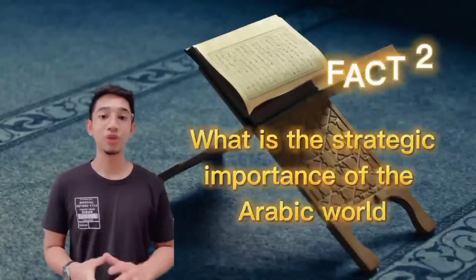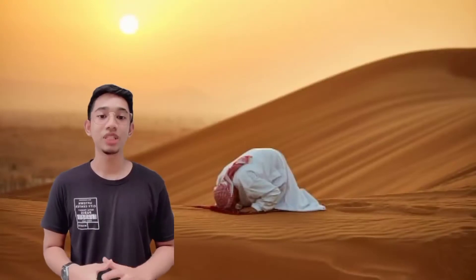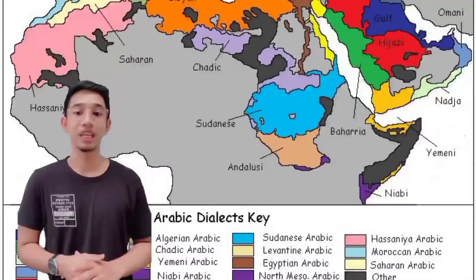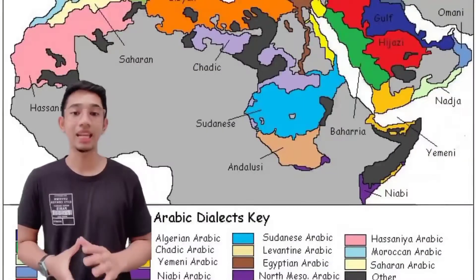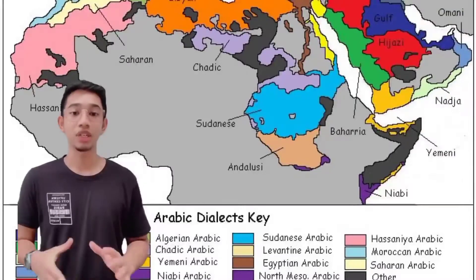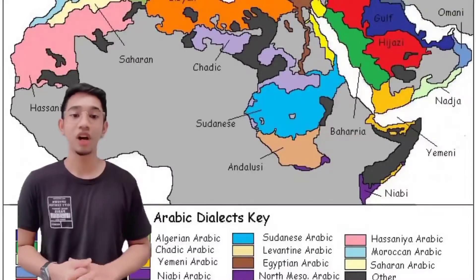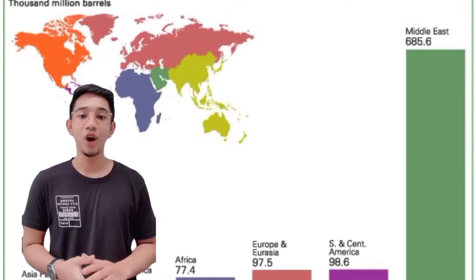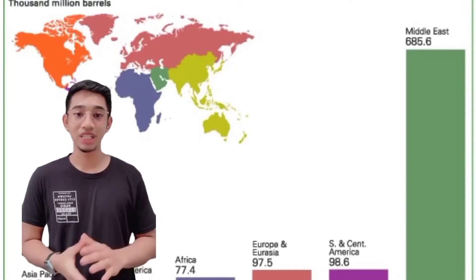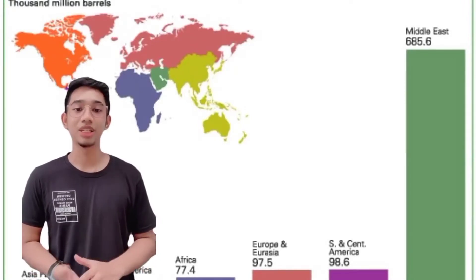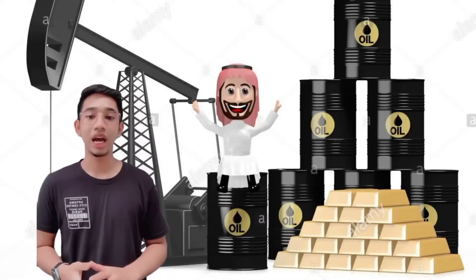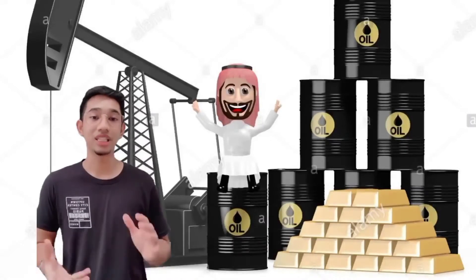What is the strategic importance of the Arabic world? The Arabic world, which consists of 22 countries, holds several faiths and people from many ethnic groups who speak different languages and dialects. Approximately 60% of the world's oil reserves are located either in the Arabian Peninsula or very close to that region. Saudi Arabia is the country with the highest oil reserve in the world.